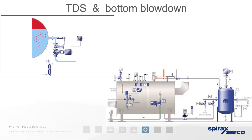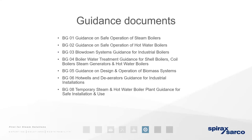TDS blowdown is performed similarly to bottom blowdown but taken from the side of the boiler. We can automate it to ensure the best possible steam condition and avoid blowing down more than the prescribed amount. Steam operators have health and safety guidance documents — the key word being 'guidance.' There's no obligation to observe them, but if a severe failure or health and safety incident occurred, questions would be asked if guidance had not been followed.